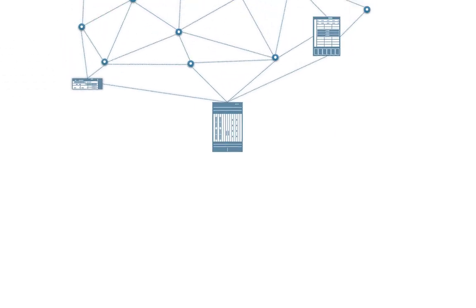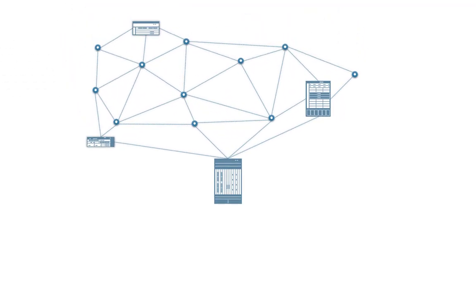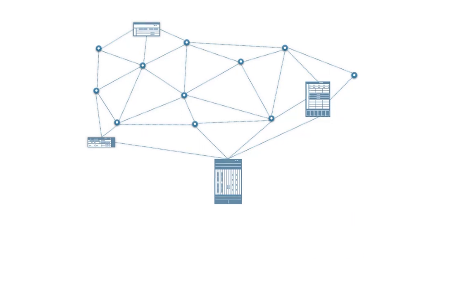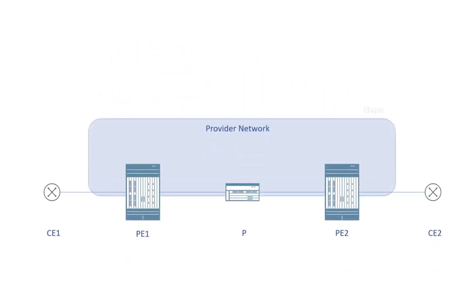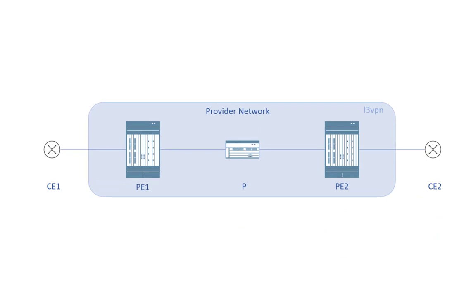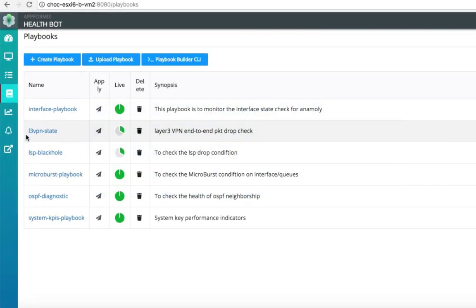With the capability to program network rules spanning across multiple devices, HealthBot helps detect such network issues without any manual effort. For this demo, we have a layer 3 VPN created between 2 PE routers with traffic flowing between them. Here is a playbook L3 VPN state with a couple of simple network rules that sanitizes the L3 VPN connection.